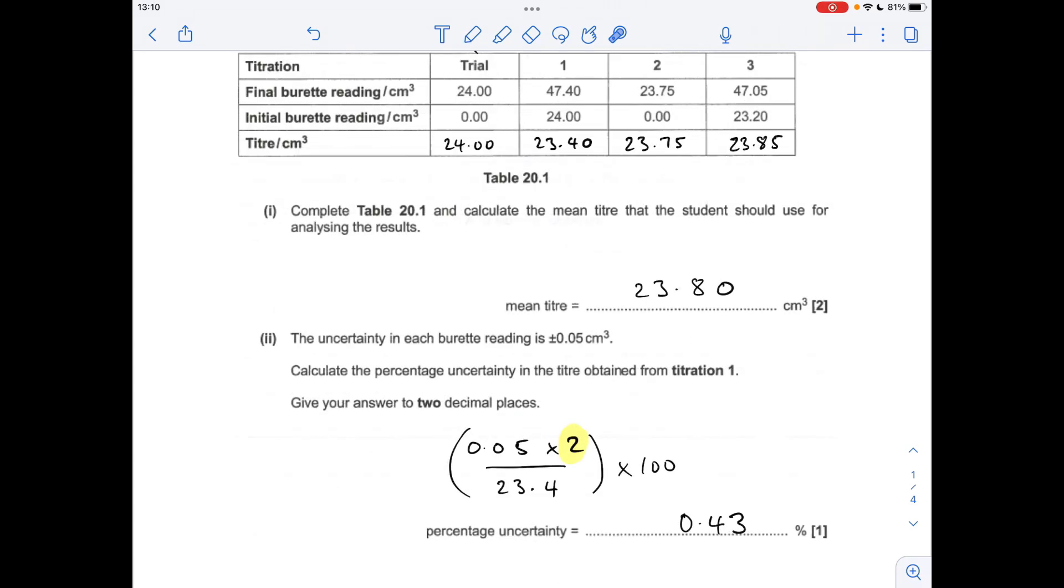Moving on to the next part, the uncertainty in each burette reading is that. Remember, a titre is based on two readings, so we double the error, divide by what's been measured. For titration one, that's times 100, giving 0.43%.